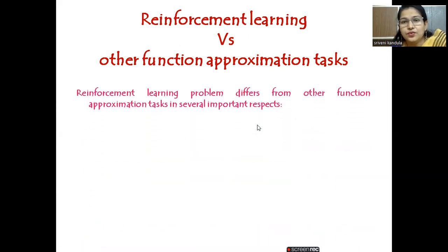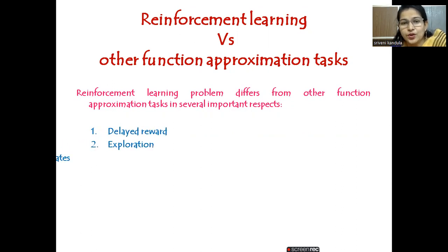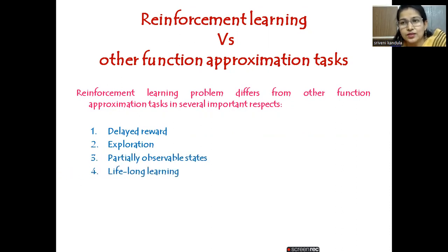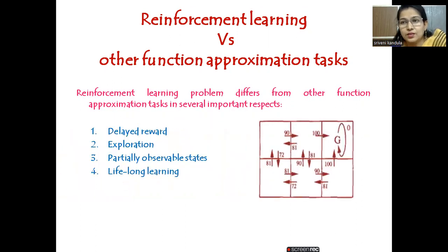Reinforcement learning differs from other learning tasks in several aspects. The first one is delayed reward, the second one is exploration, the third one is partially observable space, and the fourth one is lifelong learning. To understand these, let us take the problem that we solved using Q-learning as a reference.